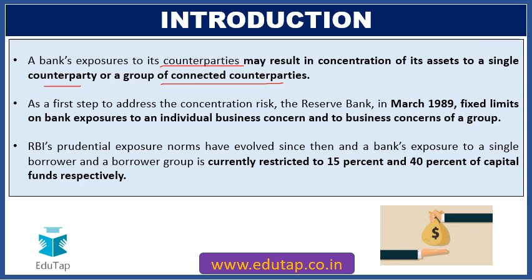To address this concentration risk, RBI way back in March 1989 fixed limits on bank exposures to individual business concerns and to groups. Since then, RBI's prudential exposure norms have evolved. Currently, a bank's exposure to a single borrower is restricted to 15% and to a borrower group to 40% of the bank's capital funds respectively.